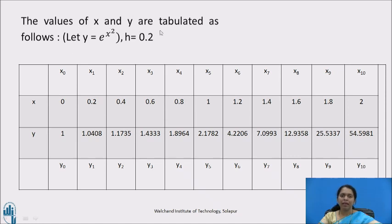The values of x and y are tabulated as follows. x0 is initial value 0, x1 is x0 plus h that is 0 plus 0.2 equals 0.2. x2 is x1 plus h that is 0.2 plus 0.2 equals 0.4. In the same manner, you have to get all the ordinates and finally, x10 comes out to be 2.